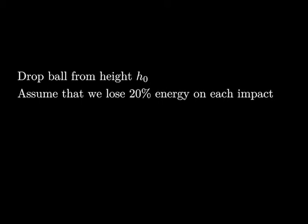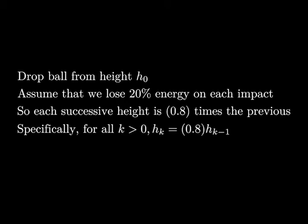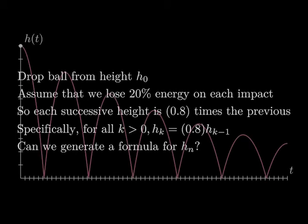Let us consider the example of a bouncing ball that makes inelastic collisions with the ground. Specifically, we will assume that it loses 20% of its energy every time it hits the ground. Let us also assume that it is initially dropped from height h0. Since it loses 20% of its energy with each bounce, each time it comes back up, its maximal height will be 80% of its previous height.